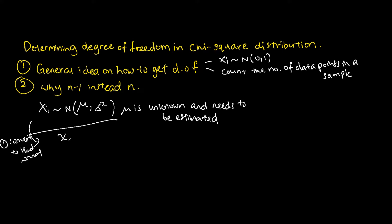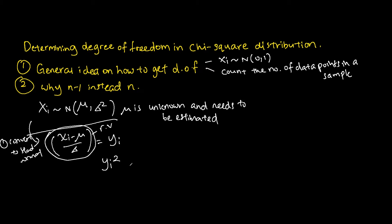To convert to standard normal, you take xi minus mu over sigma. Let's call this random variable yi. So yi = (xi − mu) / sigma. If you then square yi, this will follow a chi-square distribution. The key point is that your xi must be converted to the standard normal before you can square it and treat it as a chi-square random variable.